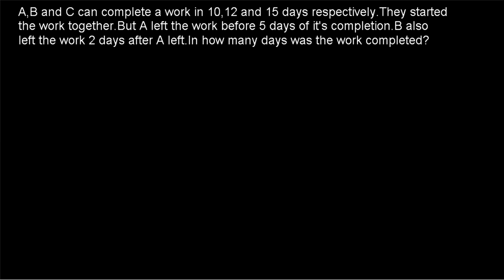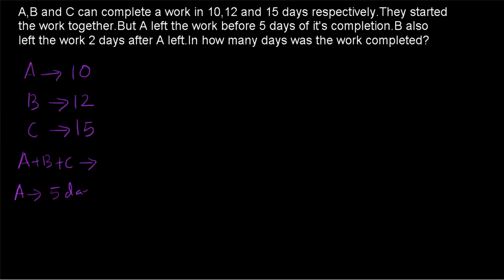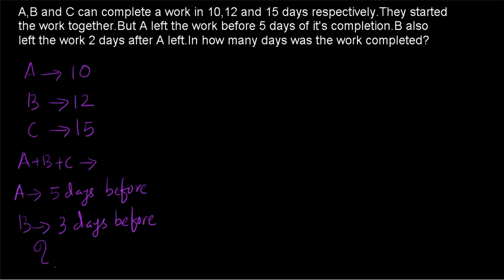Now let's go to example number 2. A, B and C can complete a work in 10, 12 and 15 days. They started the work together but A left the work before 5 days of its completion. B also left the work 2 days after A left. In how many days was the work completed? A is taking 10 days, B is taking 12 days, and C is taking 15 days. They start together but A is leaving 5 days before completion. B is leaving 2 days after A left, which means B is leaving 3 days before the work is completed. So, in how many days will the total work be completed?